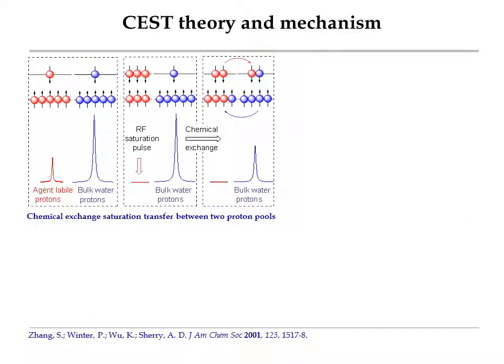To understand the design principles for the development of this new agent and the reason why this new agent is more desirable for pH imaging in vivo, let's have a brief look at the CEST mechanism first. As indicated in this figure, to generate a CEST signal, it needs to have two pools of protons slowly exchanging with each other. The first proton pool is from agent-labile protons like amide, hydroxy protons, or bound-water molecule protons. The second proton pool is from bulk water molecules.